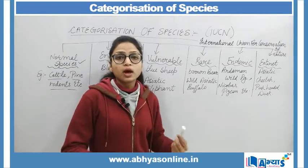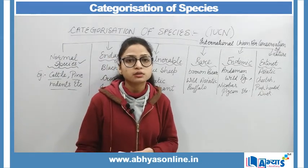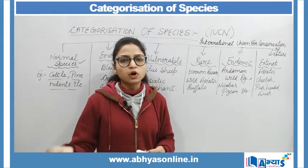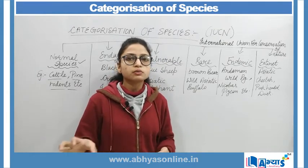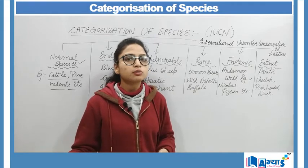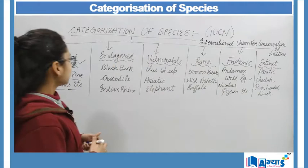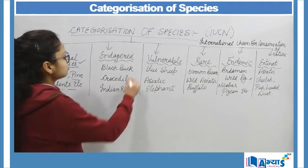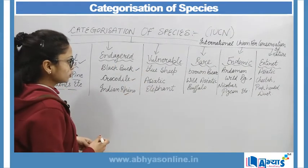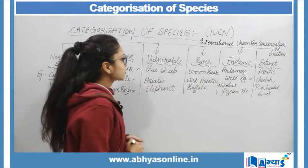Endangered species वो हैं जो high risk face कर रही हैं extinct यानि खत्म होने का। आने वाले सालों में बहुत कम साल ही ऐसे रह गए हैं जहाँ तक यह survive कर पाएंगी, और आने वाले सालों में यह भी खत्म हो जाएंगी world में से। इसके examples हैं black buck, crocodile, Indian rhino।